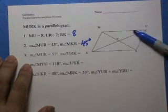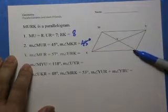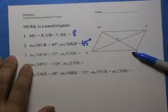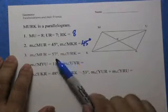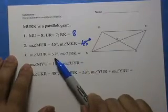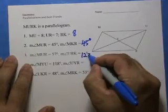These two, angle MUR and angle URK, are consecutive angles. Consecutive angles in a parallelogram are supplementary. So to get measure of angle URK, you do 180 minus 57. So it's 123.